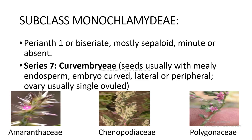Subclass Monochlamydeae: perianth one or biseriate, mostly sepaloid, minute, and epigynous. Series 7 Curvembryae: usually with starchy endosperm, embryo curved, lateral or peripheral, ovary usually single with single ovule — includes Amaranthaceae, Chenopodiaceae, and Polygonaceae as shown in the figure.